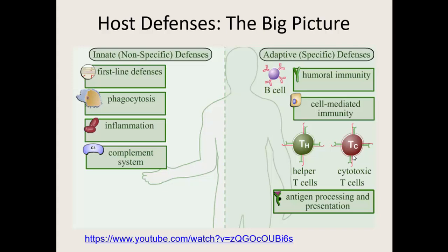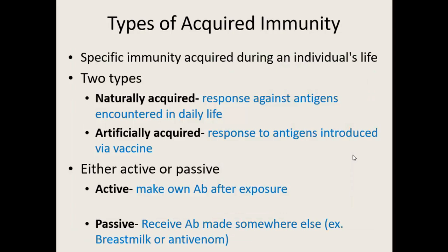We can now acquire immunity against things, and we'll talk more about the immune system in our next lecture. There are two types of acquired immunity: naturally acquired immunity — a response against antigens encountered in your everyday life. You go to work, school, kids bring stuff home, and lots of things your immune system encounters. It mounts an immune response and for some of those things you will develop immunity. The more things you expose your body to, the stronger your immune system — you're going to have more memory cells.